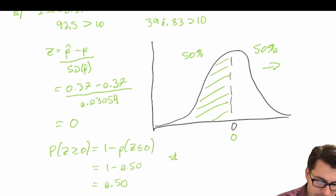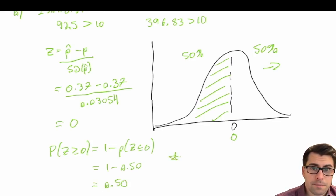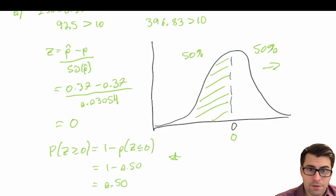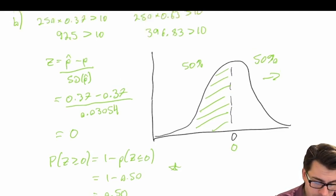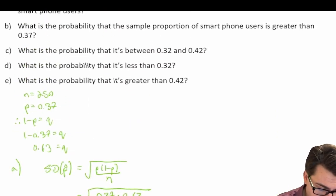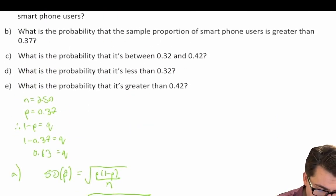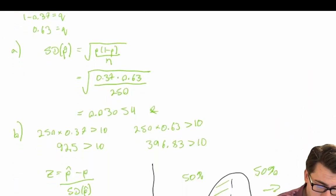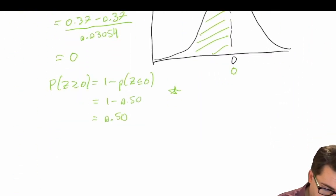Simply knowing a z-score of zero will give you a probability of 50% greater and 50% less, but I wanted to show you how to do it. Part C asks: what is the probability that the sample proportion is between 0.32 and 0.42?